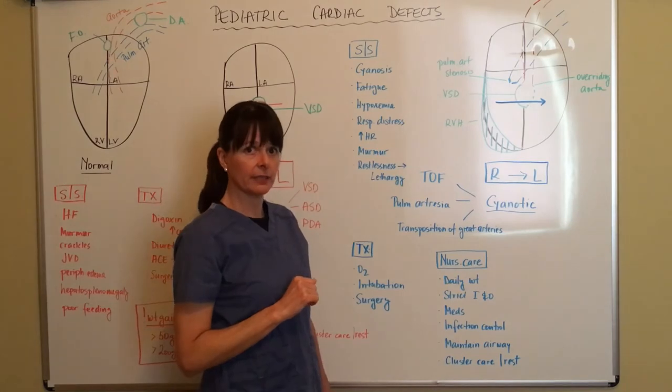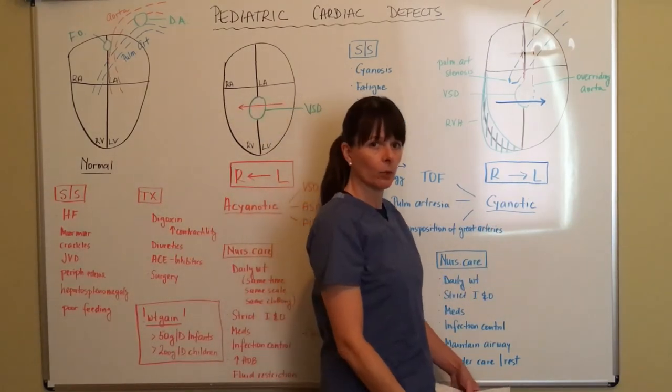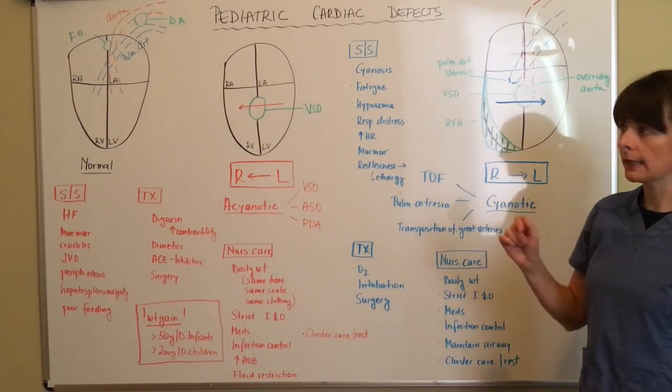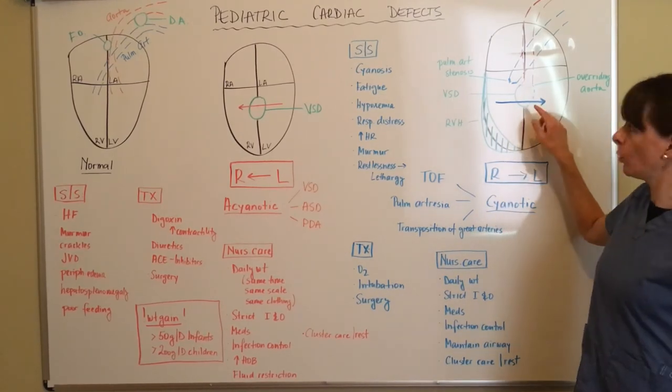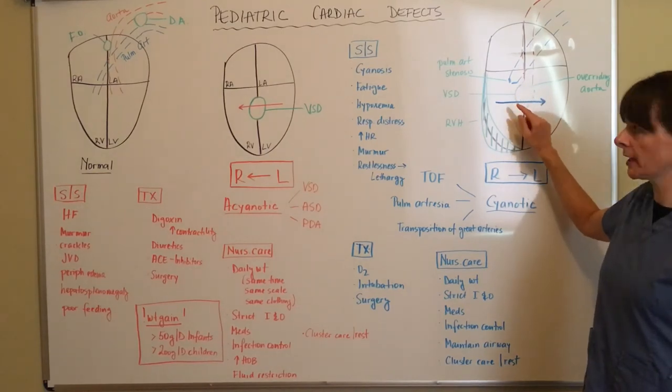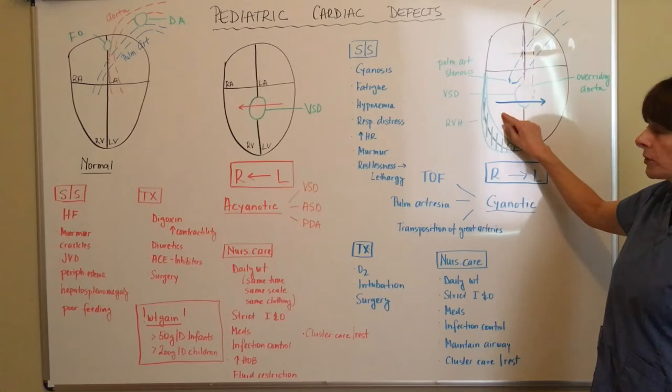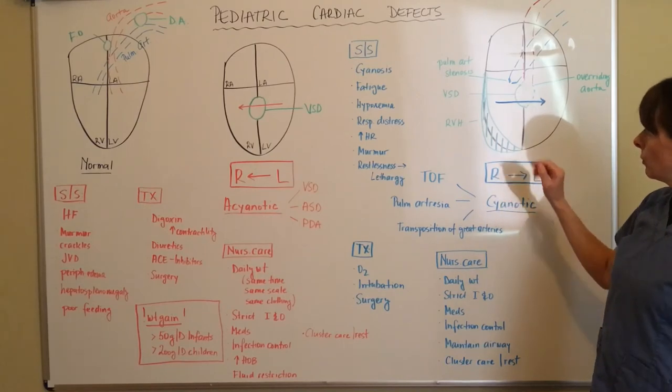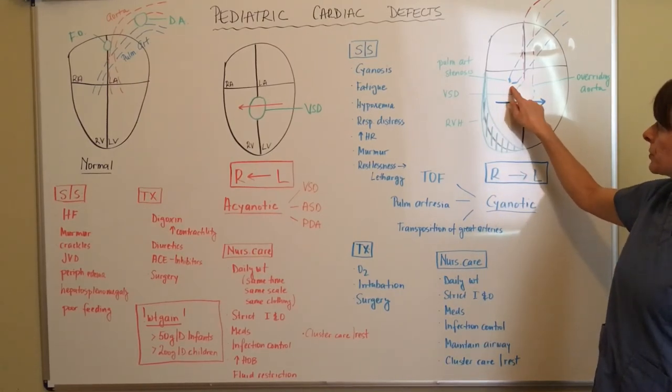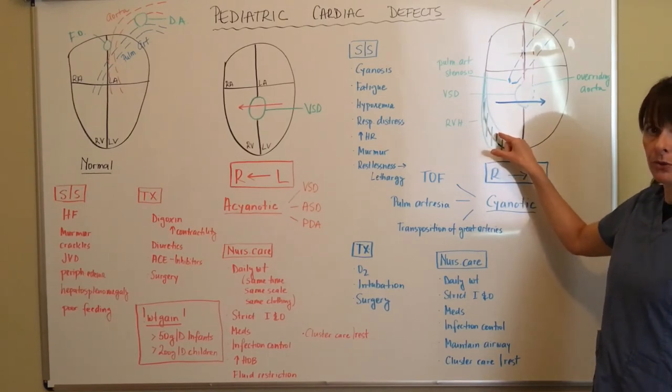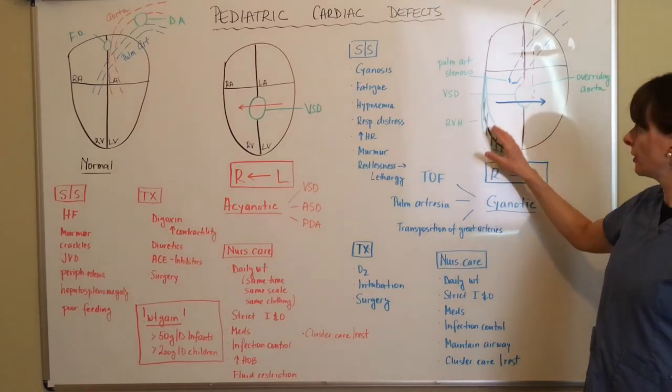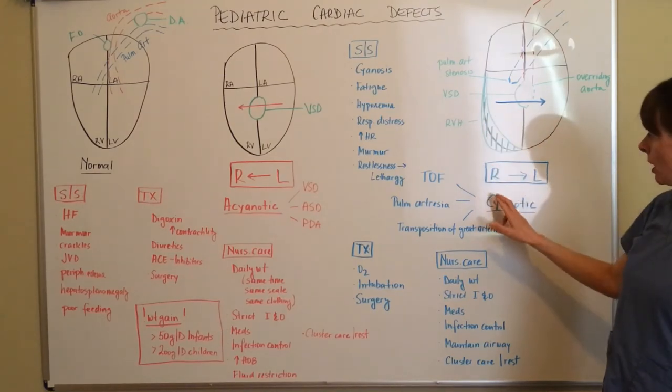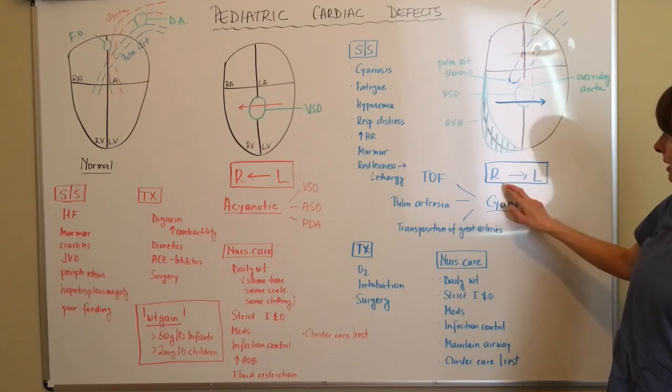And then the fourth defect in Tetralogy of Fallot is an overriding aorta. And what that means is that the aorta is abnormally originating not from the left ventricle but actually overriding over that ventricular septal defect to where now it's collecting blood from both the right and the left ventricle pumping that out to the body. Now because there is this pulmonary artery stenosis and this right ventricle is hypertrophied, now we have the opposite from over here. The pressure on the right side of the heart is going to be a lot higher than on the left. So now we have the blood flow from right to left as you can see the arrows again match here.